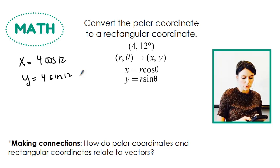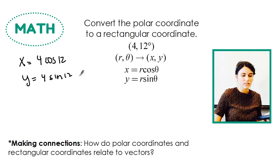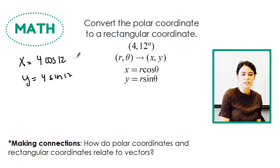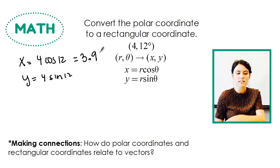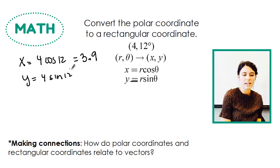So we do 4 cosine 12, which gives us approximately, I'm going to round to the nearest tenth, 3.9. And then we do 4 sine 12, which gives us approximately 0.8.